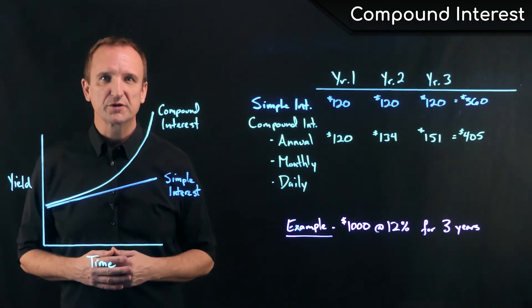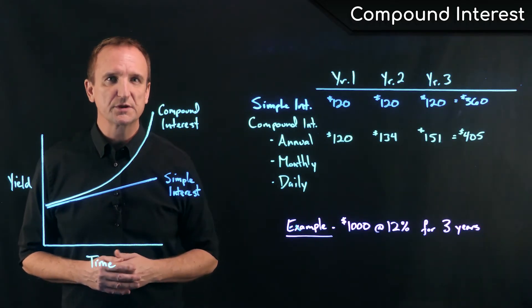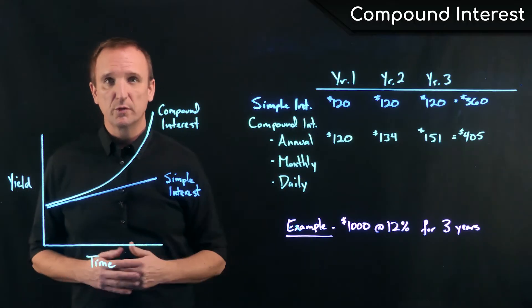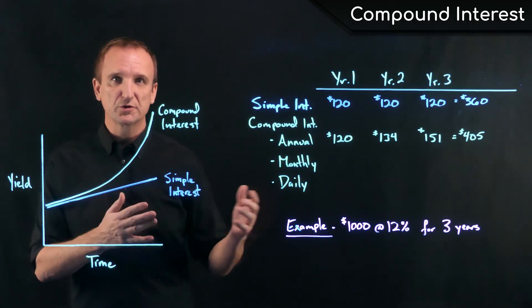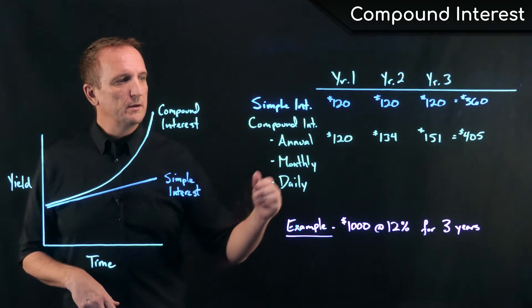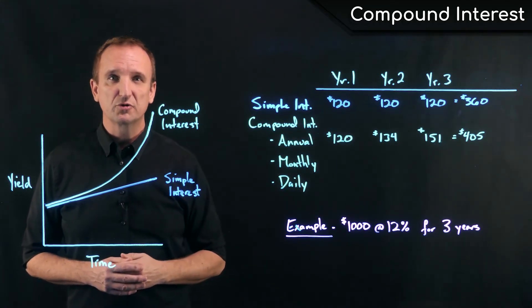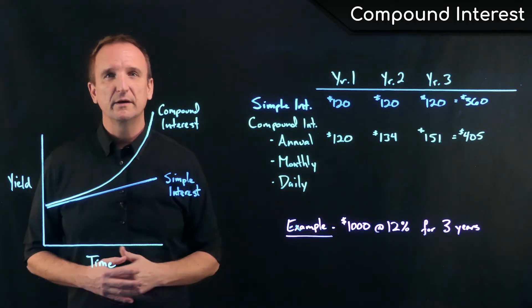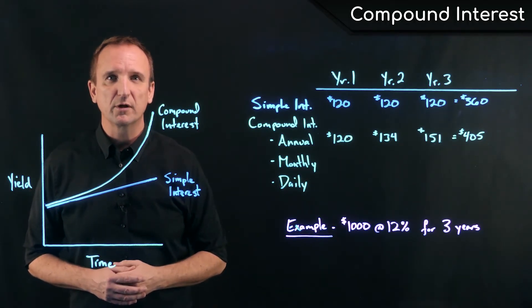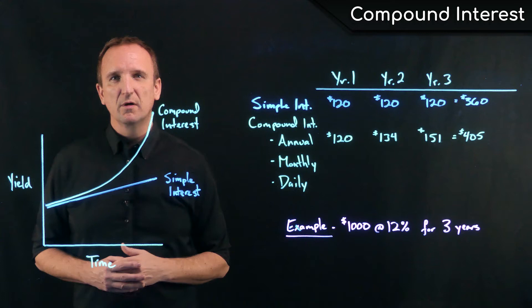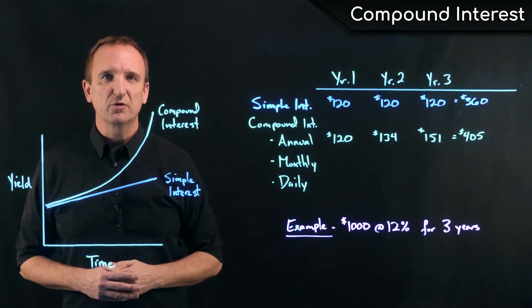In the case of compound interest, where we're still earning interest just once per year, in the first year we would make $120 on our original $1,000. But in the second year, we would actually make interest on $1,120, therefore yielding an interest payment of $134. And then in the third year, we would earn interest of $151.